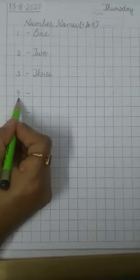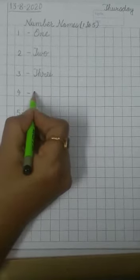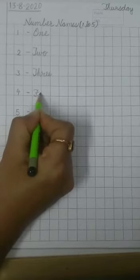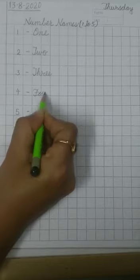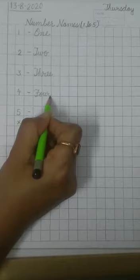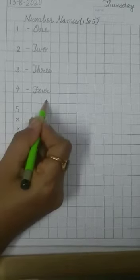Write number 4 here. Put a small dash here. Then capital F like this. Small O U R. F O U R. 4. Now leave a line here.